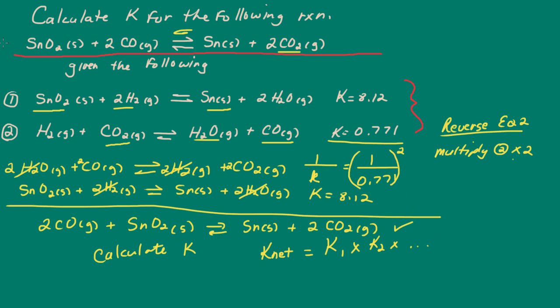So in this case here, then, our value of K is going to be 1 divided by 0.771. And that quantity is squared. And we'll multiply that by 8.12.